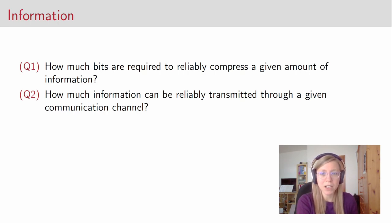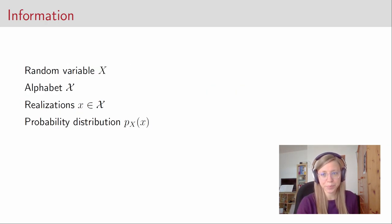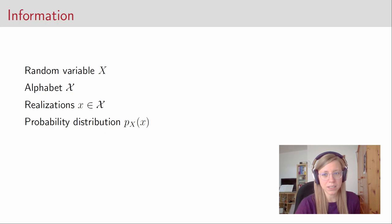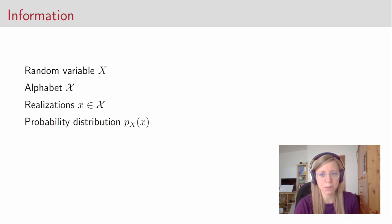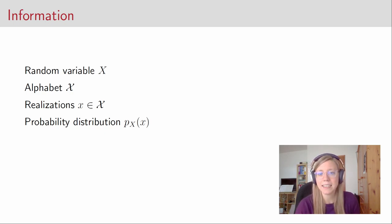How do I know how much information there is within some sort of data that I have? So when we talk about information we often talk about random variables. This is some terminology from probability theory. Every random variable comes with an alphabet, that we usually denote curly X, and this alphabet consists of realizations of the random variable. For every realization we have a probability distribution that tells us how likely it is that this realization appears.